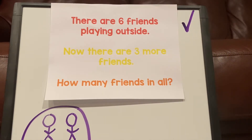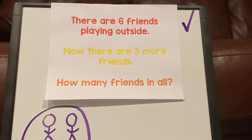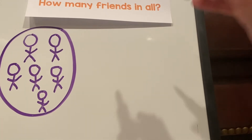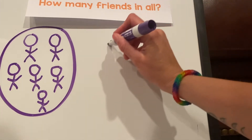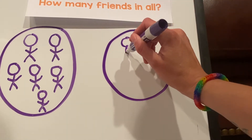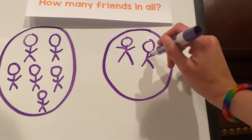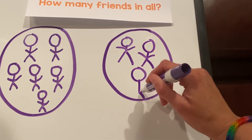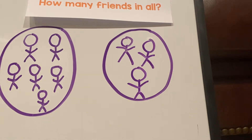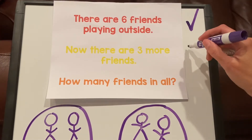My second group has how many friends? Can you figure that out? There are three — there are three more friends. So there's three friends in the other group. So let's make another group and we need to draw three friends. One, two, and three. Three friends there. Check.